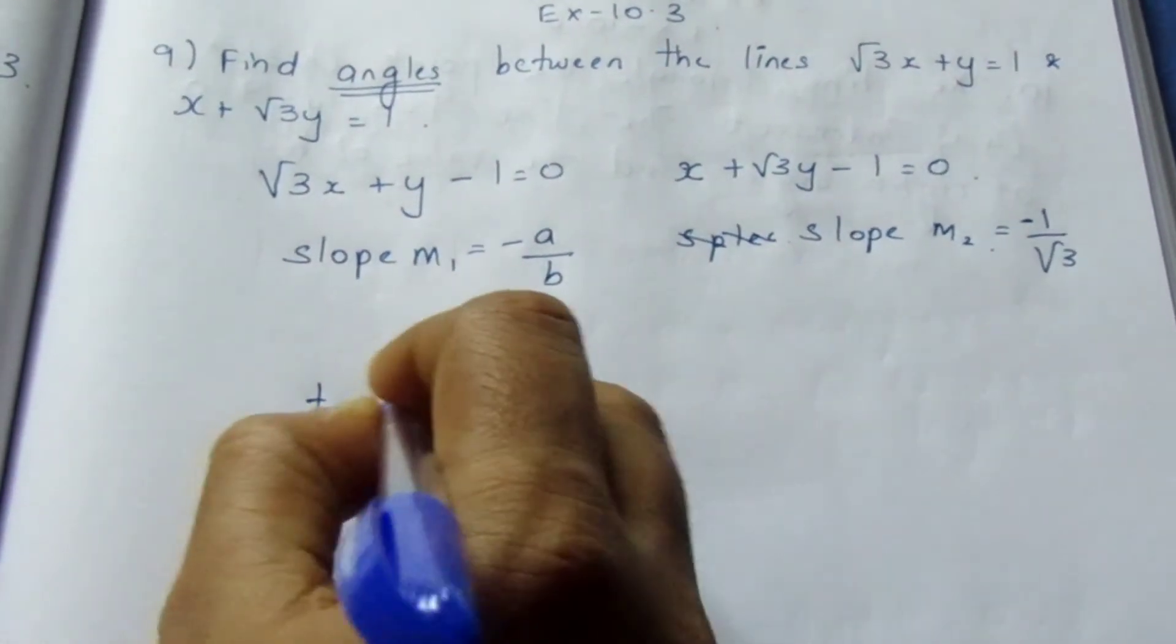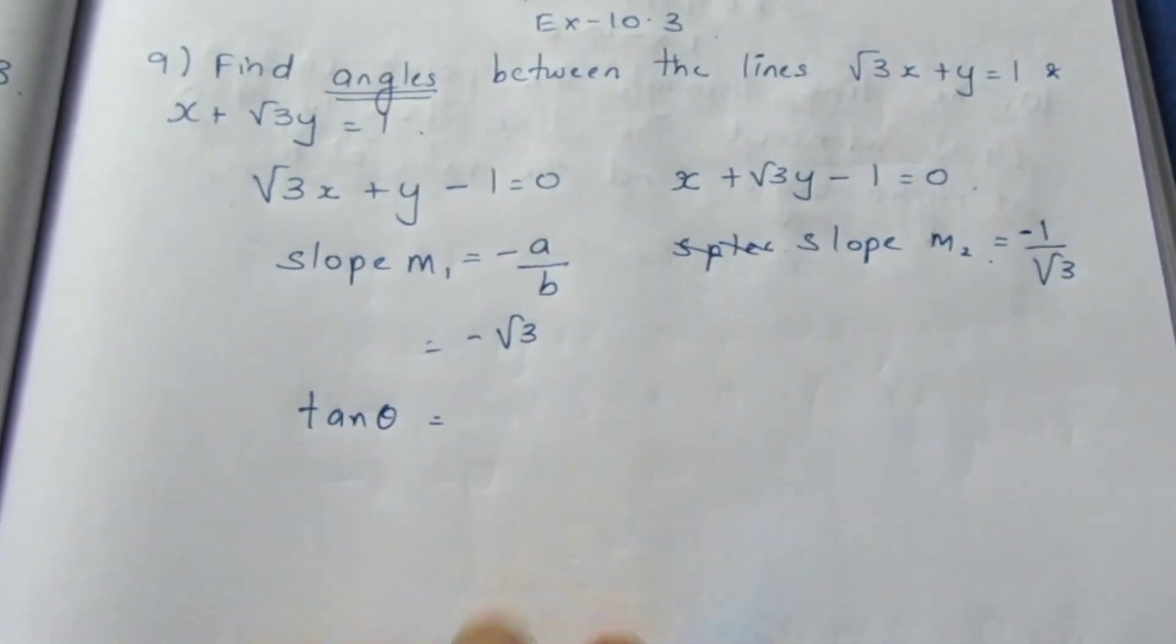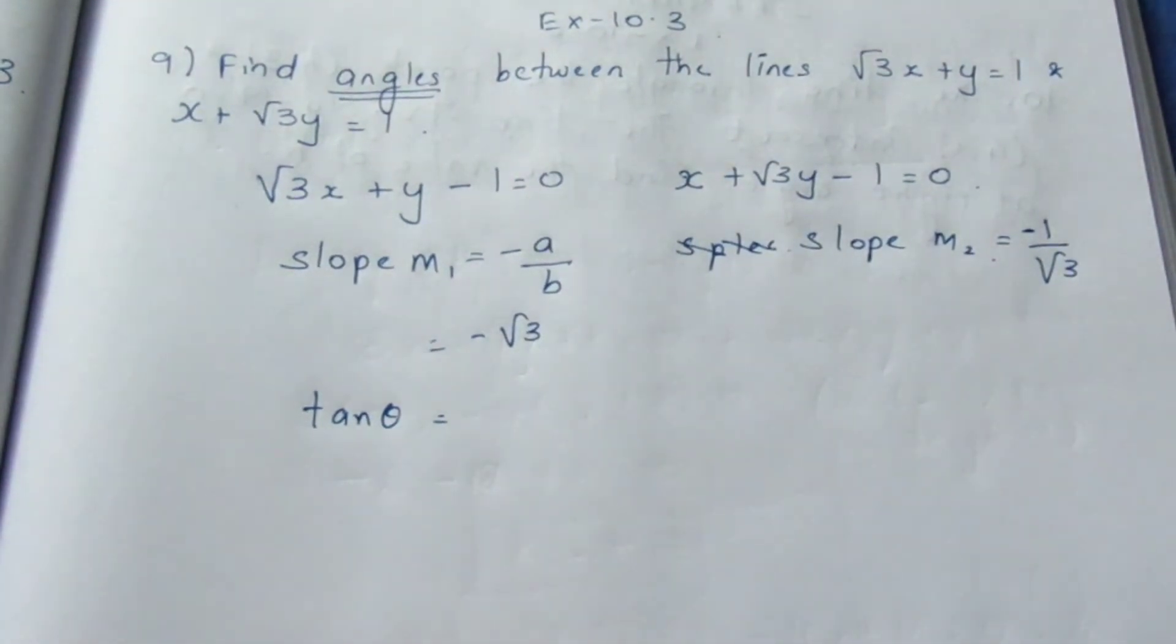So tan θ is equal to... if we multiply, we did not get -1. If it is not -1, it will not be 90 degrees. It can be any degree.